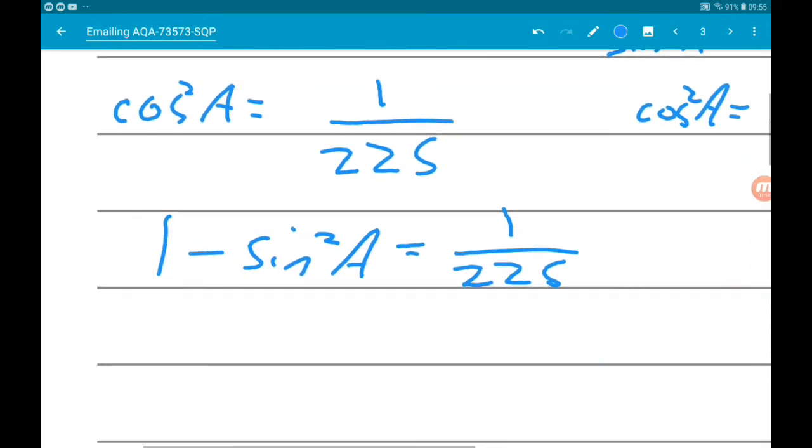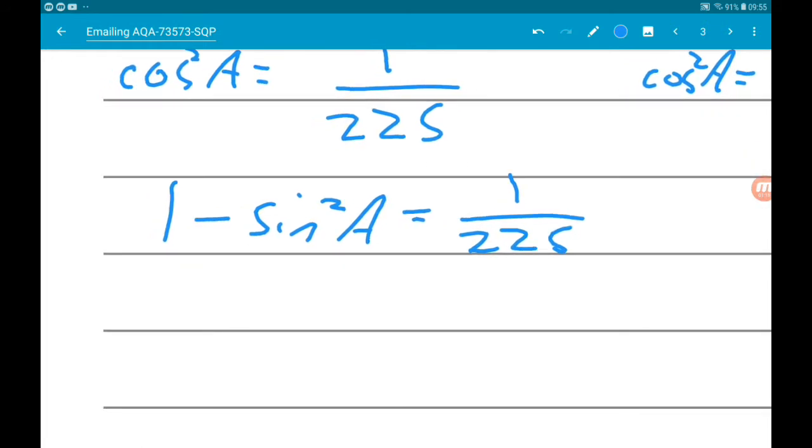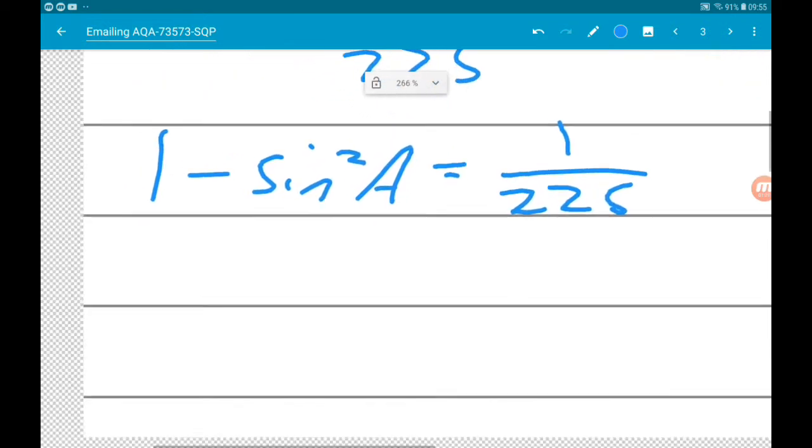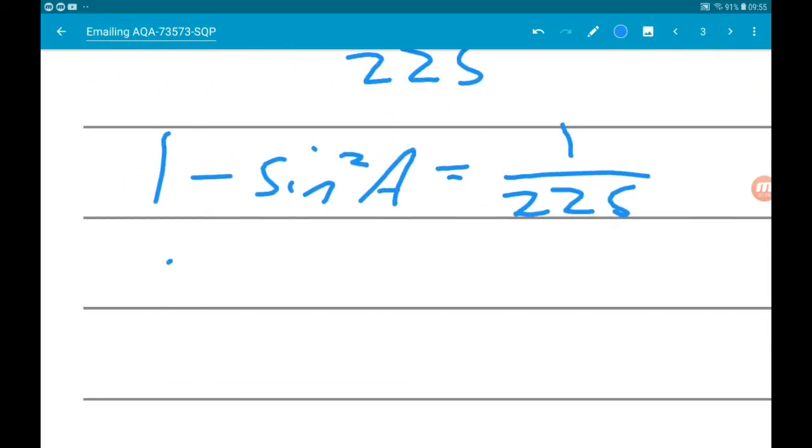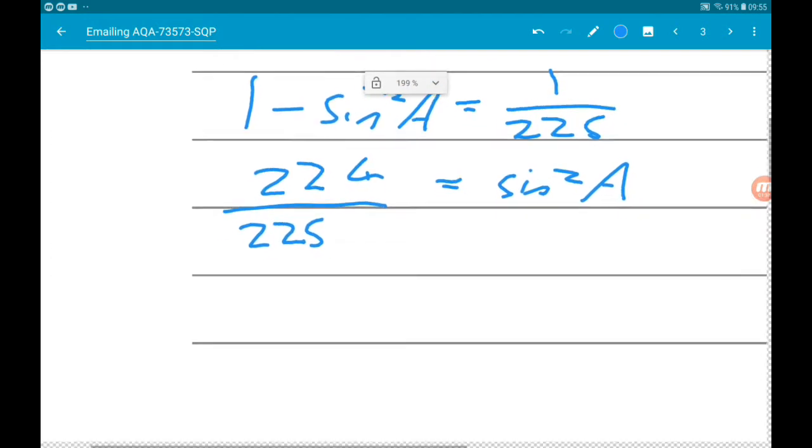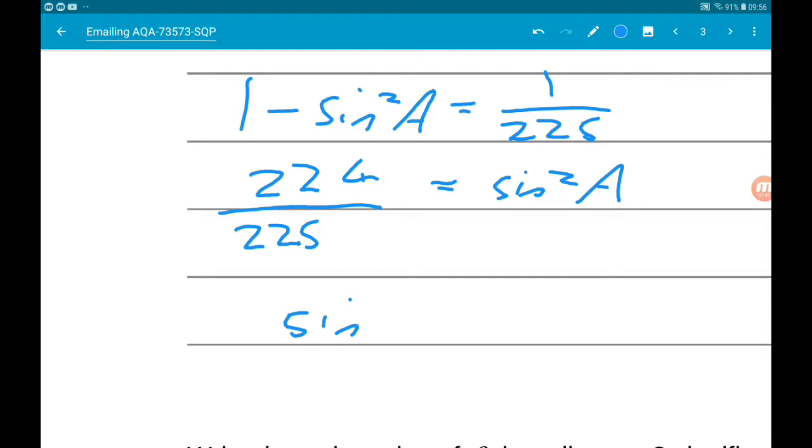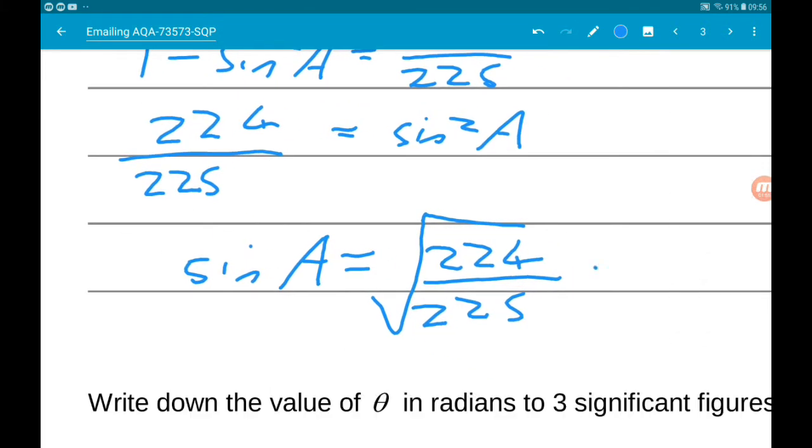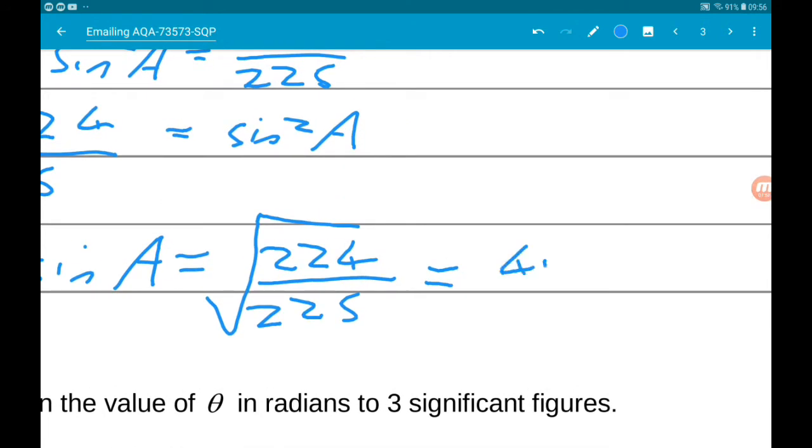Now if we add sine squared and take away 1 over 225, we get sine squared A equals 224 over 225. Taking the square root gives us sine A equals 4 root 14 over 15.